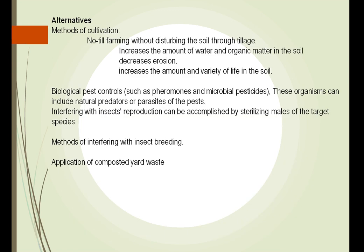What can we do instead of using pesticides and chemicals? We can try no-till farming, which involves only planting seeds. In the past, we would run a rotavator through the cornfield, then another device to break up the clods, then another to plant holes for the corn, and finally plant the corn. This process allowed more methane to escape and removed more beneficial chemicals and organic matter.